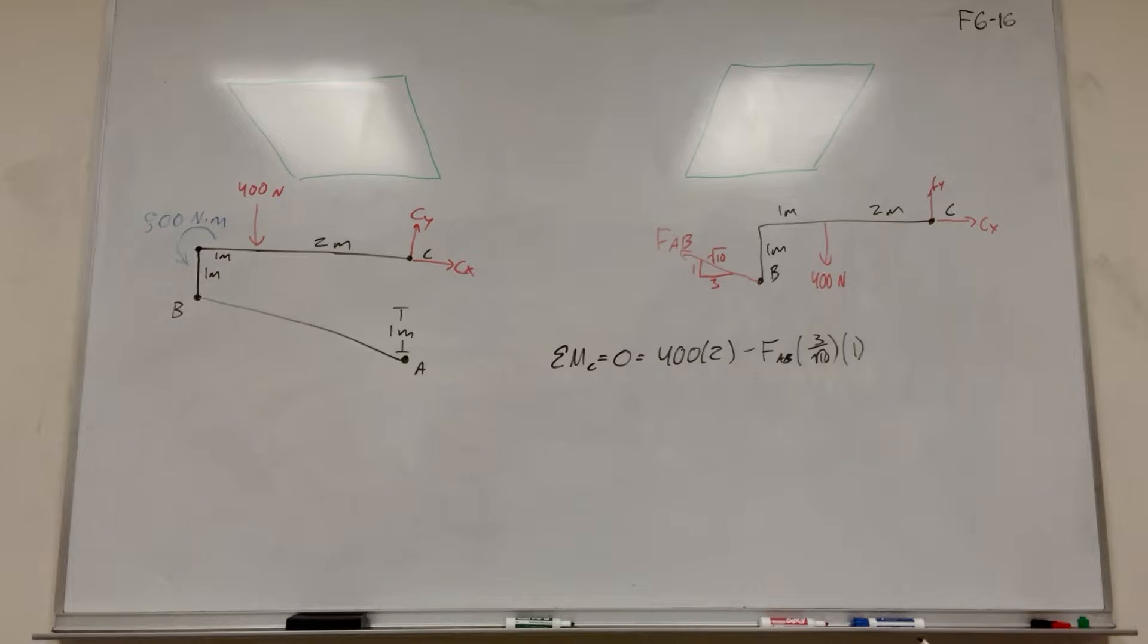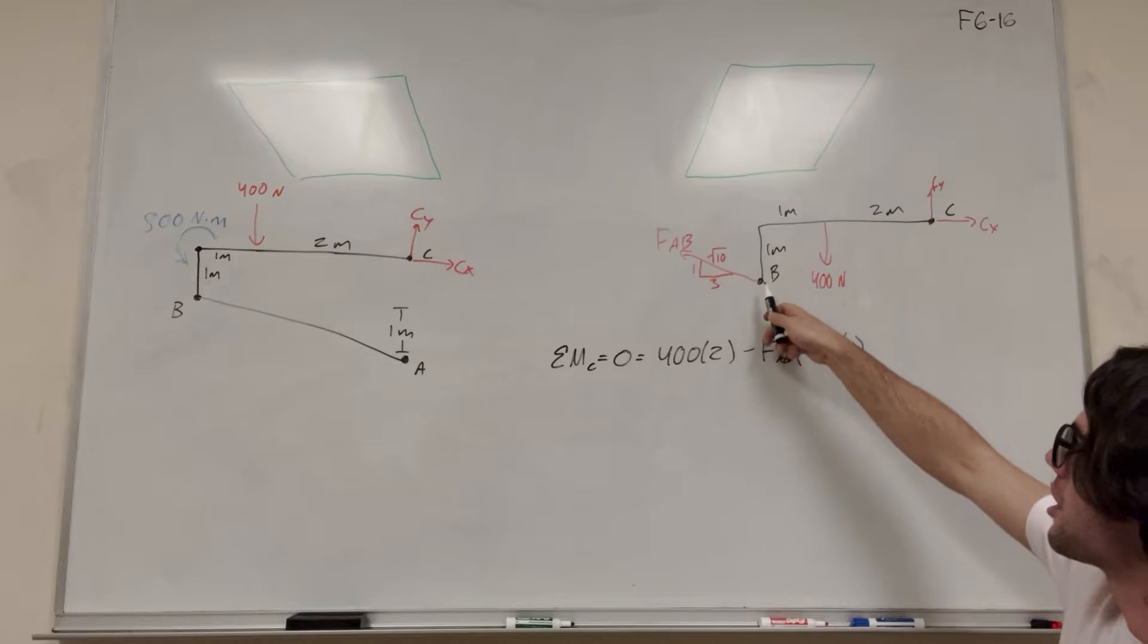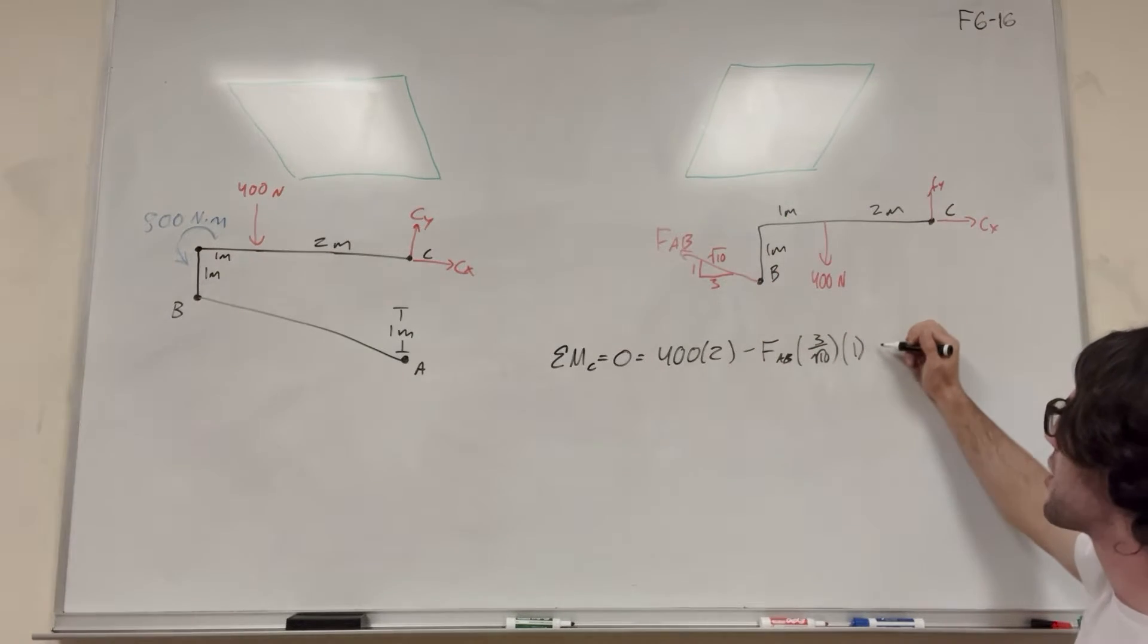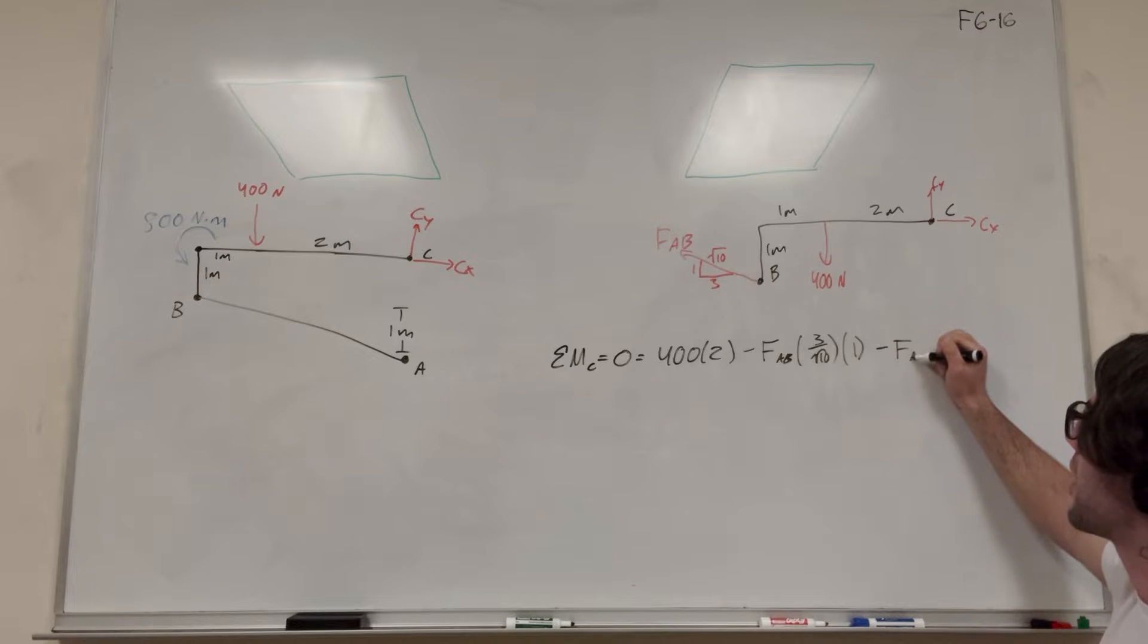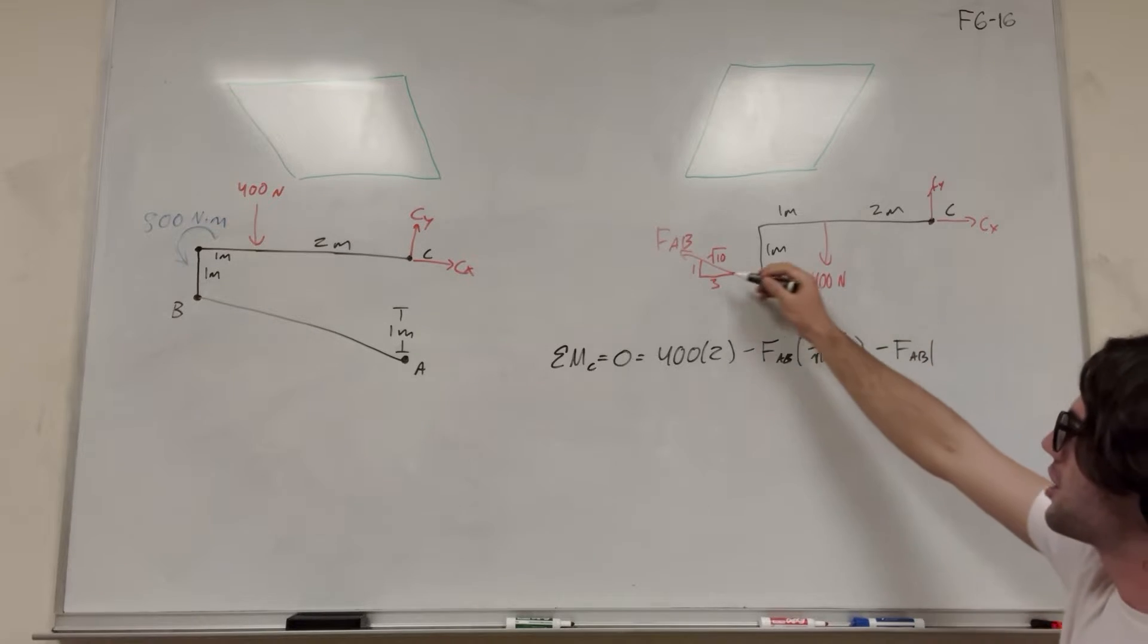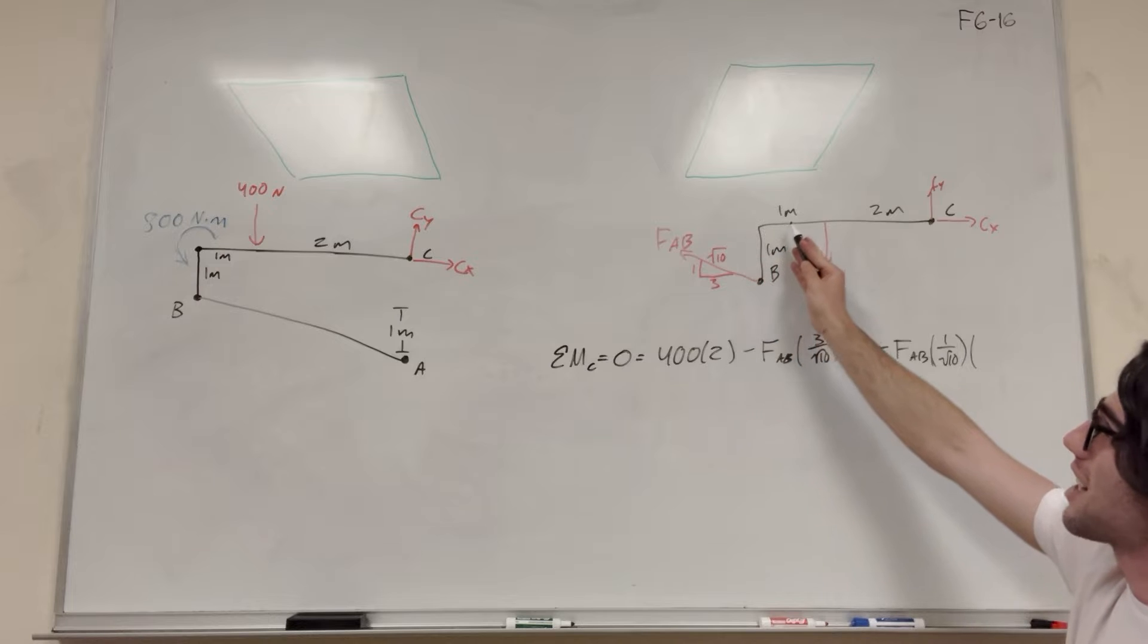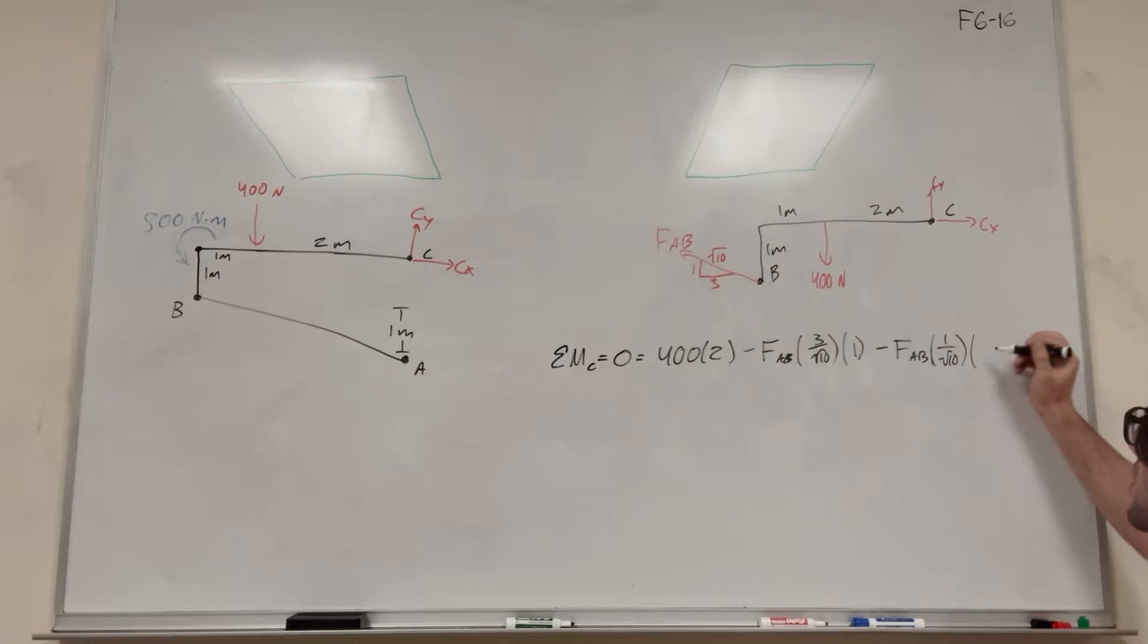So then if we're looking in the Y direction, the Y direction is pushing this way. So if we're pushing this way, it's going to make us want to rotate clockwise. So that's going to be another subtraction. So minus force AB again. And then this time its ratio is 1 over square root of 10. And its distance, because we're doing it in the Y, its distance in the X direction is this 2 plus 1 meters, which is 3 meters.